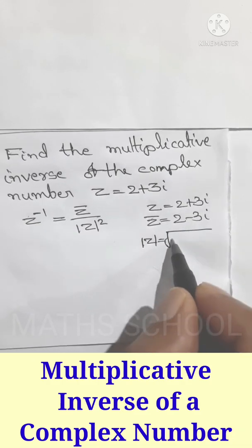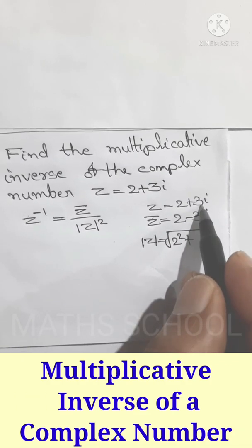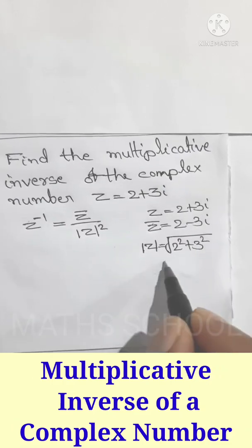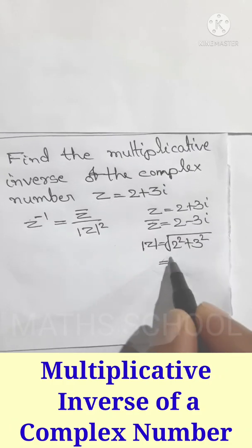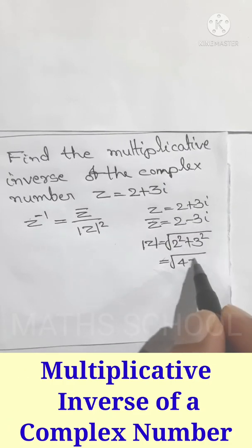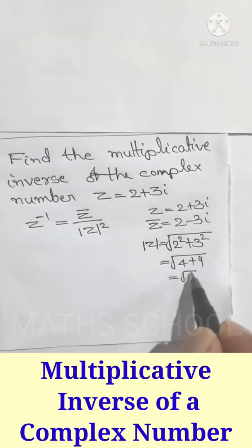Here the real part is 2, therefore 2 squared plus imaginary part 3, 3 squared — that equals the square root of 4 plus 9, which equals the square root of 13.